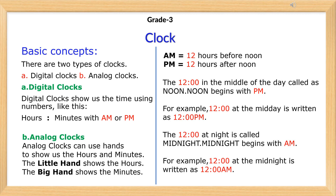The 12 o'clock at night is called midnight. Midnight begins with a.m. For example, 12 at midnight is written as 12 a.m.